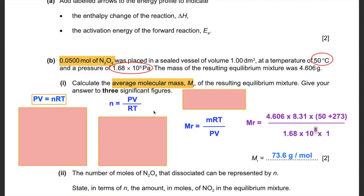To convert: multiply Pascals by 10⁻³ to get kiloPascals, so 1.68 × 10⁵ Pa becomes 1.68 × 10² kPa. For temperature, add 273 to 50°C to get 323 K. We use the formula PV = nRT, where pressure times volume equals number of moles times the gas constant times temperature in Kelvin. To make moles the subject, divide both sides by RT.